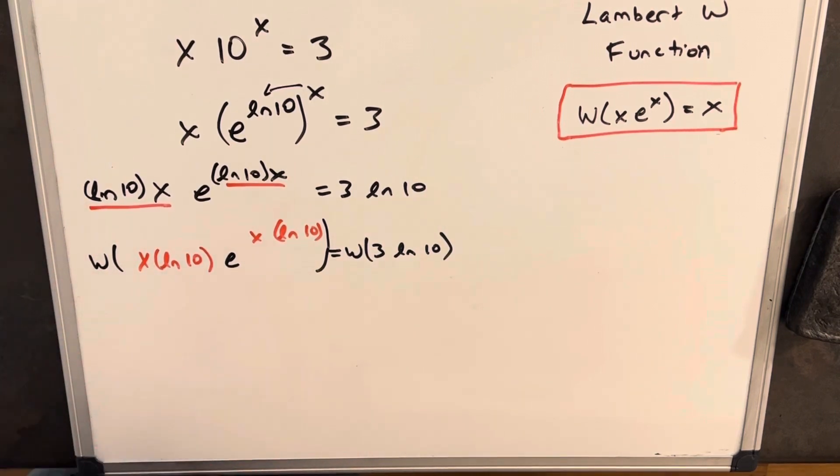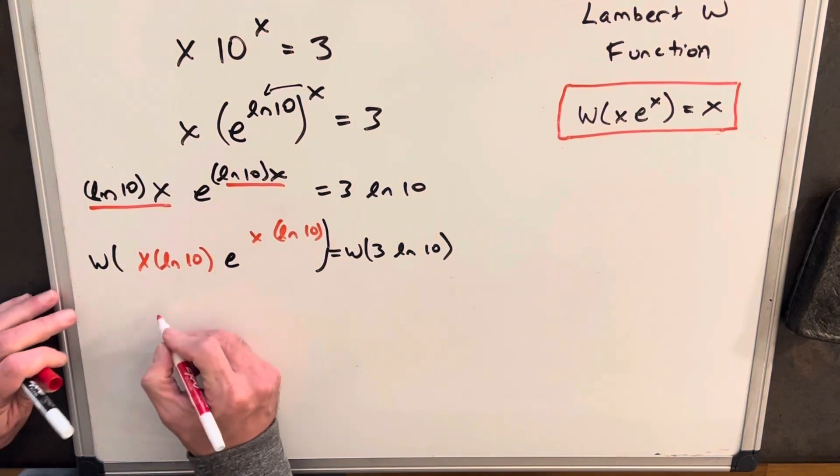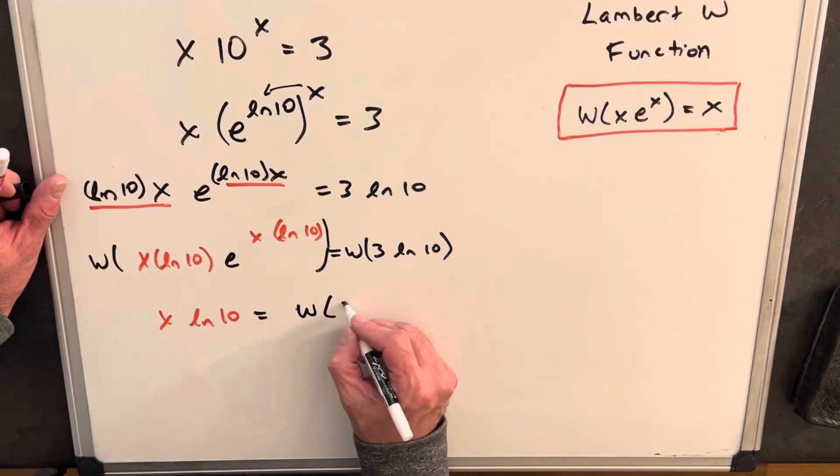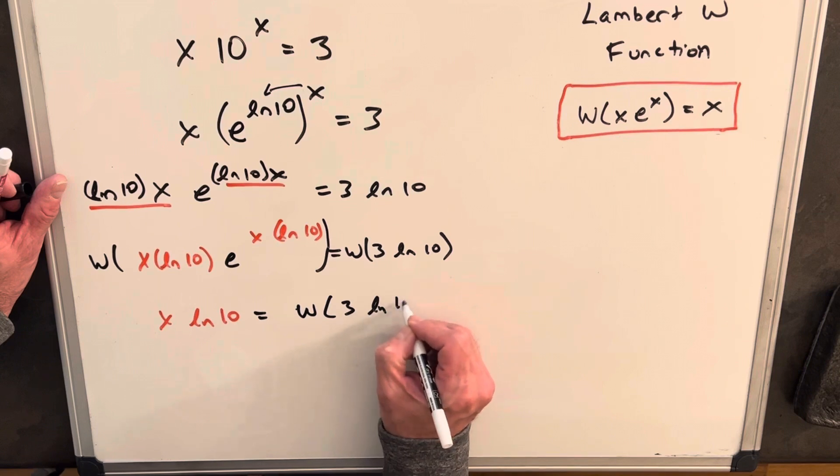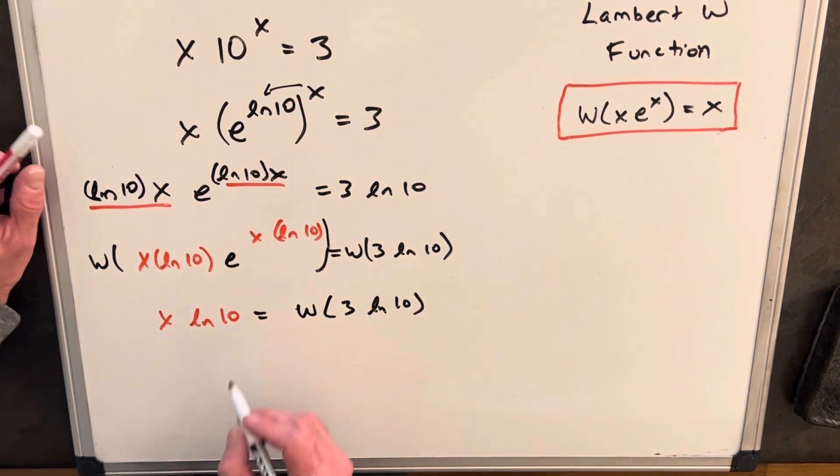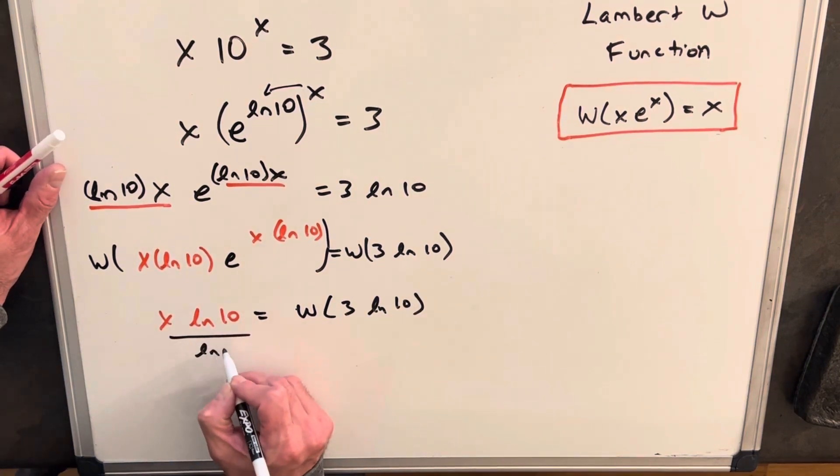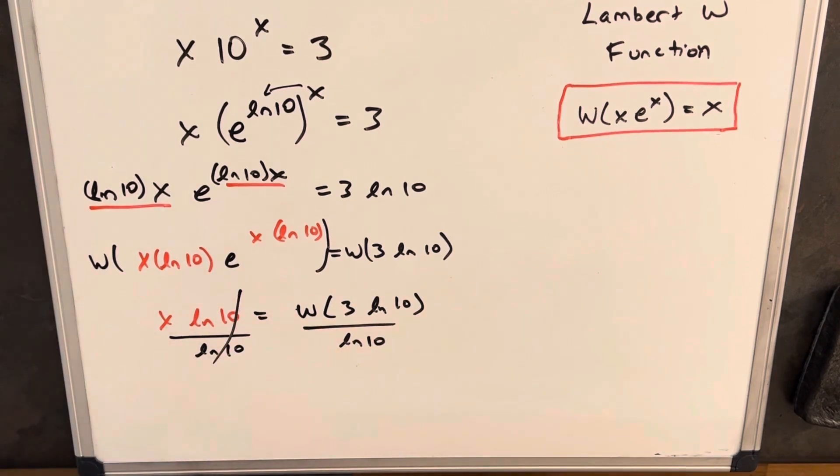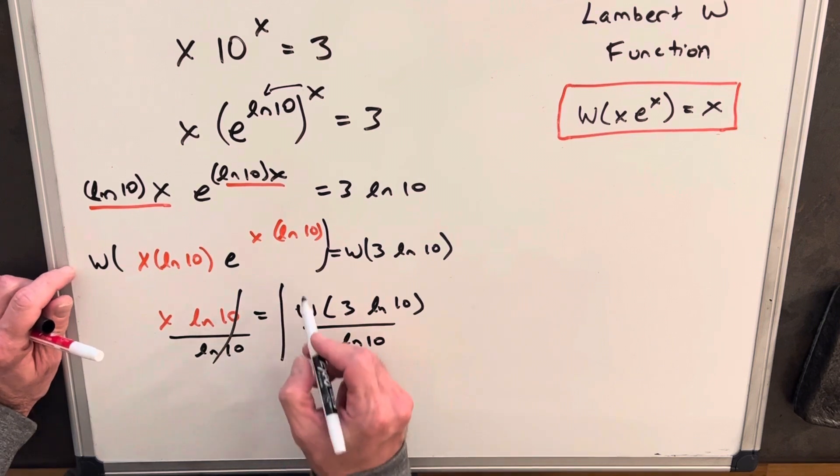And then so on the left side, this is just going to spit out x ln 10. Then on the right side, we're going to have Lambert W of 3 ln 10. And then I can just divide by ln 10, so that will isolate our x. This will cancel, and we're left with this for our solution.